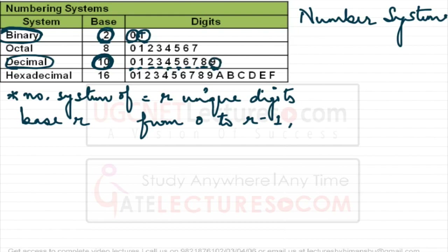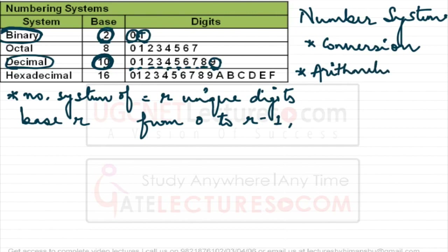So what are we going to learn in number systems? We are going to see inter-conversions between different number systems — from decimal to binary, binary to decimal, binary to octal, and so forth. We will also cover arithmetic operations: addition, subtraction, and multiplication.